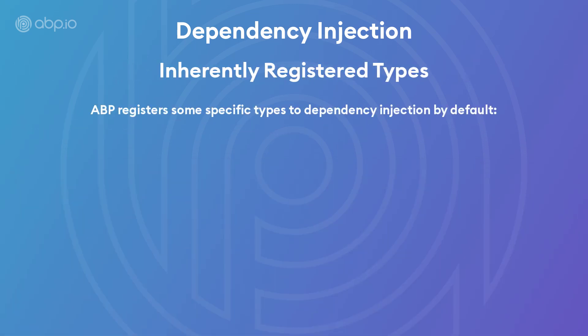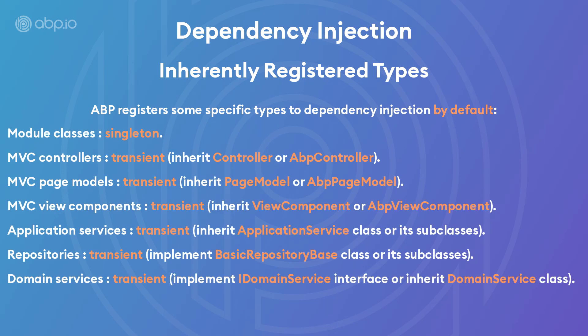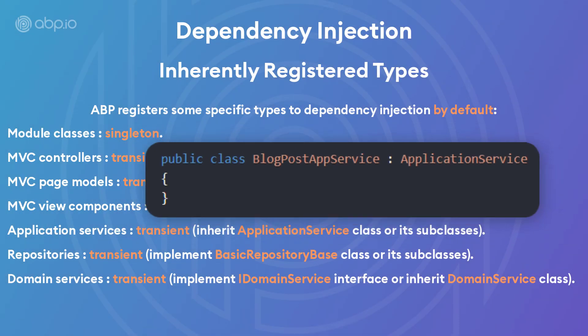ABP registers some specific types to dependency injection by default. Module classes are registered as singleton. Controllers, models, and view components, application services, repositories, and domain services are all registered as transient. For example, BlogPostAppService derives the application service base class and therefore it is automatically registered with a transient lifetime.